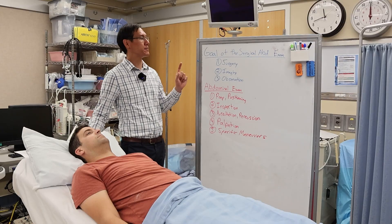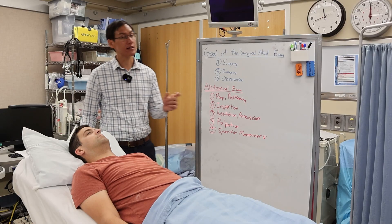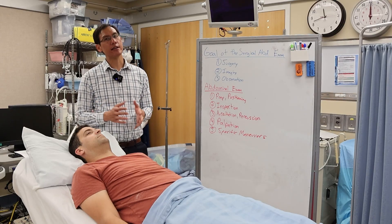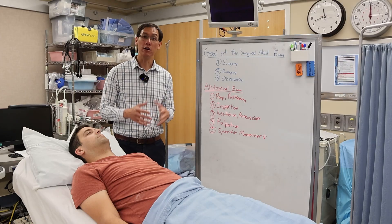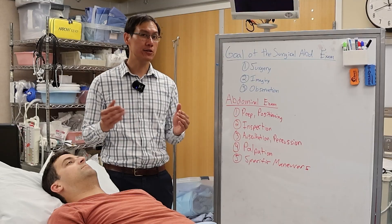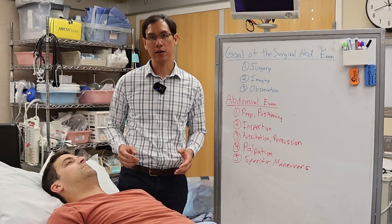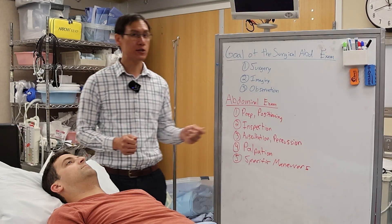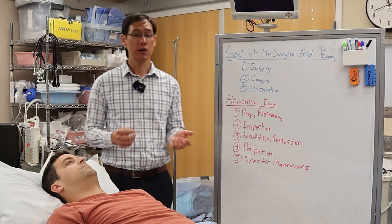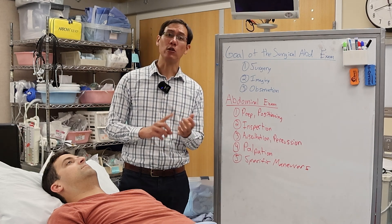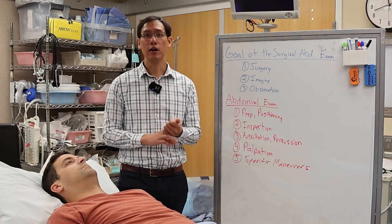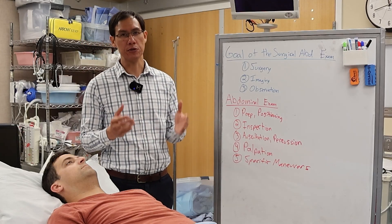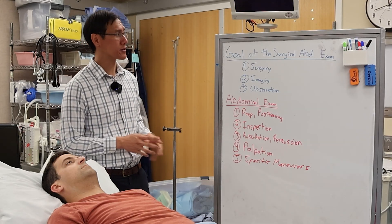Today we're going to be talking about the abdominal exam, and specifically the surgical abdominal exam. One thing to note is that the abdominal exam is just one portion of the history and physical. To do a good focused abdominal exam, you have to have a good history. History pertaining to the abdominal exam includes quality of pain, location, duration, other symptoms, and prior history such as surgeries. All this will help you perform a focused abdominal exam.